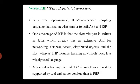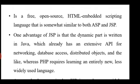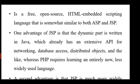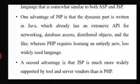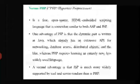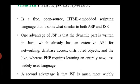Compared to PHP — which is a free, open-source HTML-embedded scripting language similar to both ASP and JSP — the main advantage of JSP is that its dynamic part is written in Java, which already has an extensive API for networking, database access, and distributed objects. PHP, on the other hand, requires learning an entirely new and less widely used language. JSP is also much more widely supported by tool and server vendors than PHP.